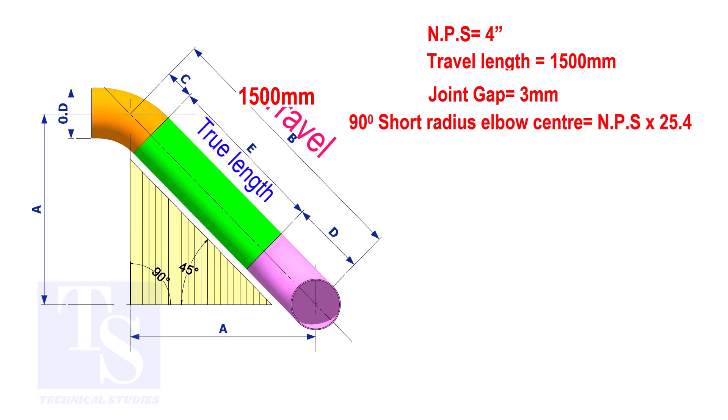To calculate the elbow center of a 90 degree short radius elbow, multiply the nominal pipe size by 25.4. The answer is 101.6 millimeters.